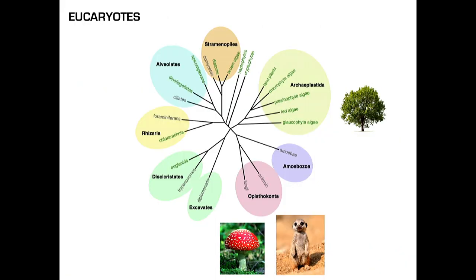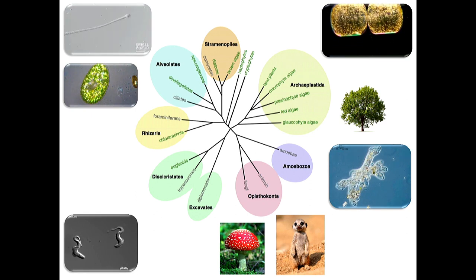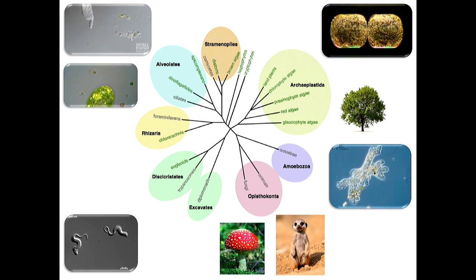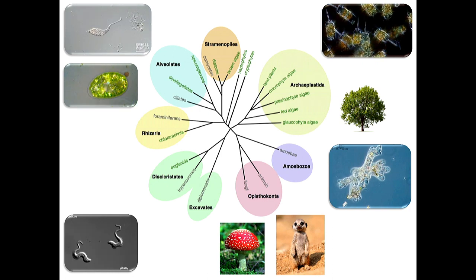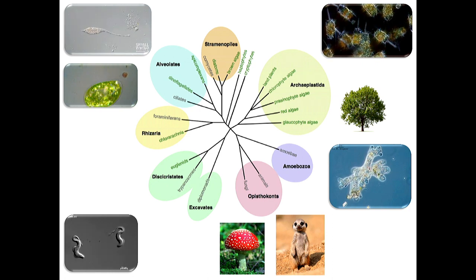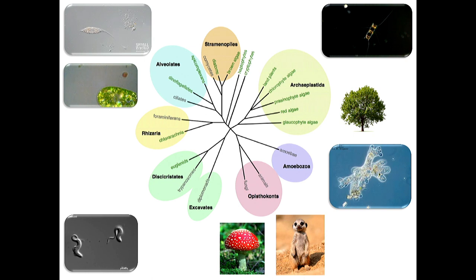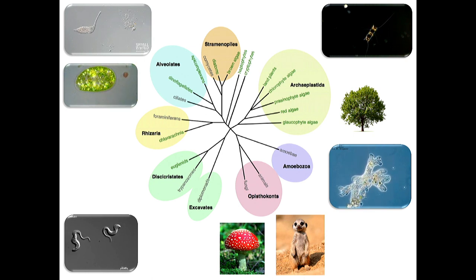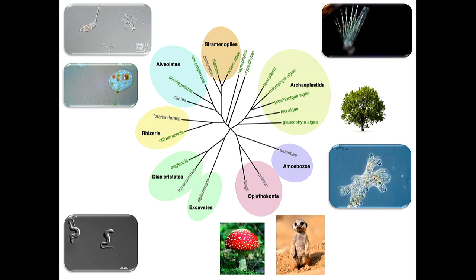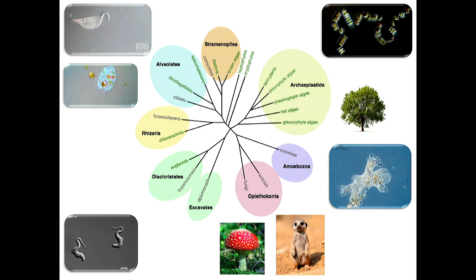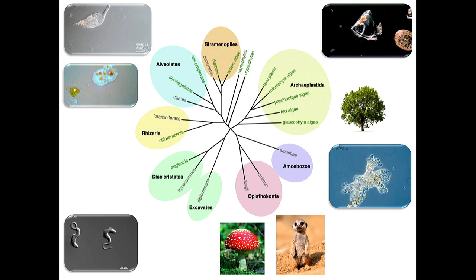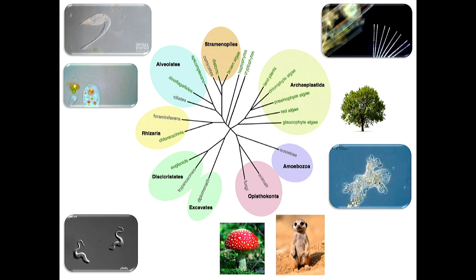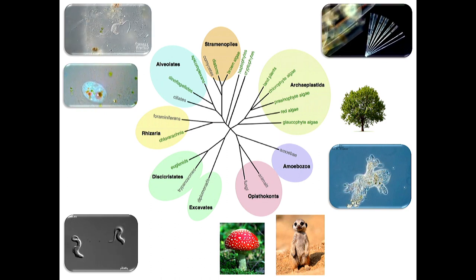Let's place slime molds in the Archaea tree. Here you have the general big kingdoms, like the fungi kingdom, the animal kingdom, and here the plants. You can see that most of the eukaryotes are unicellular organisms, and there's a huge diversity of unicellular organisms.